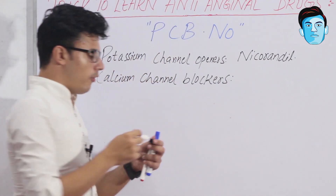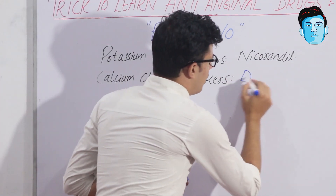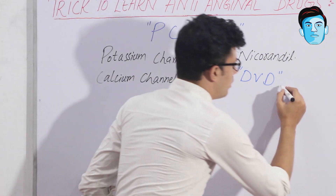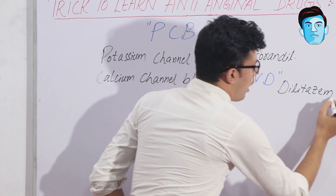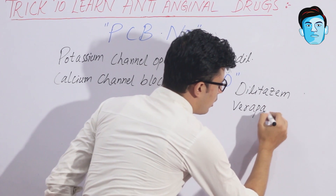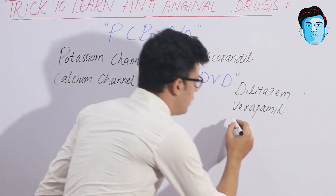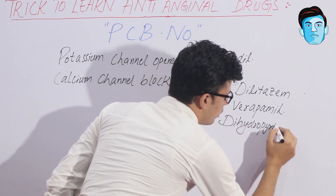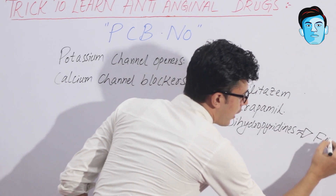C stands for Calcium Channel Blockers. For calcium channel blockers, we have a trick: DVD. D stands for Diltiazem, V stands for Verapamil, and the second D stands for Dihydropyridines. Out of the dihydropyridines, we have another trick: FAN.